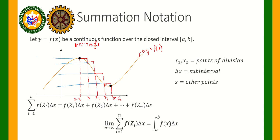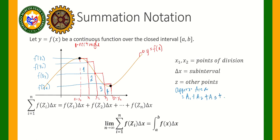Let's denote the heights as f of z sub 1, f of z sub 2, f of z sub 3, and f of z sub 4. The approximate area will be the composite area: area of rectangle 1 plus area of rectangle 2 plus area of rectangle 3 plus area of rectangle 4, and so on up to rectangle n.